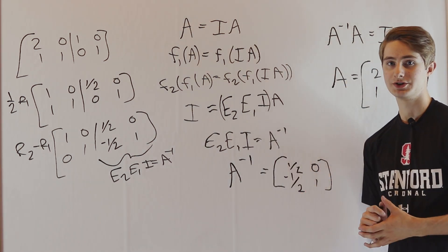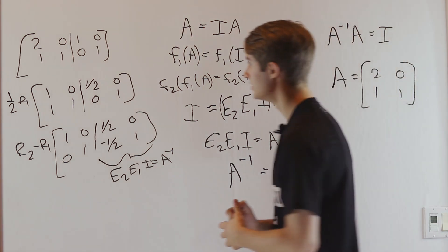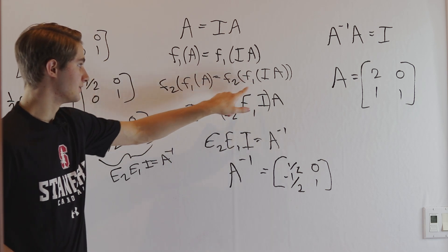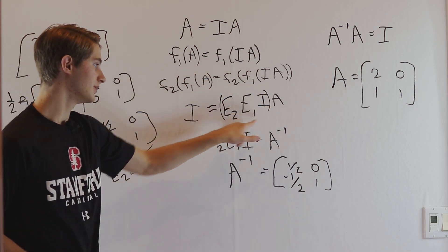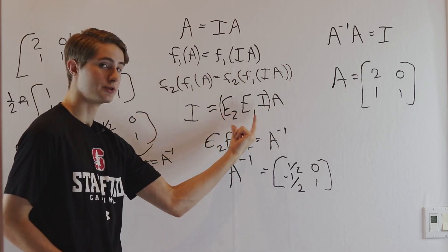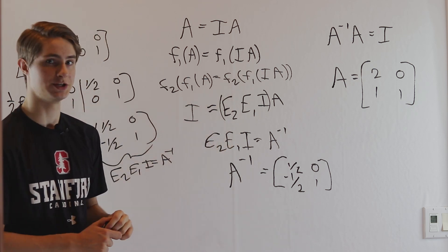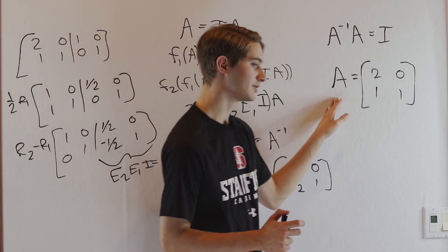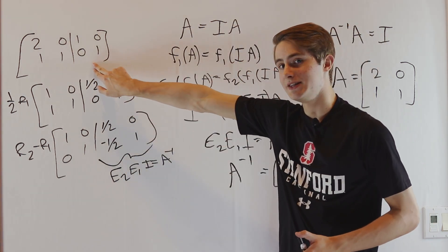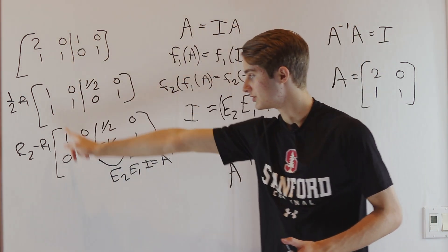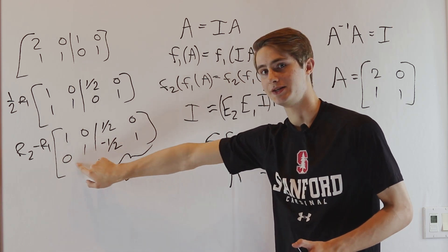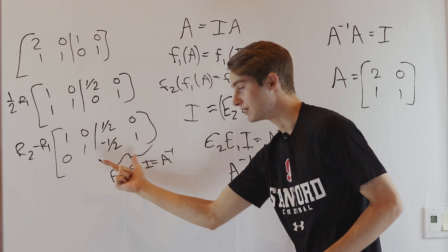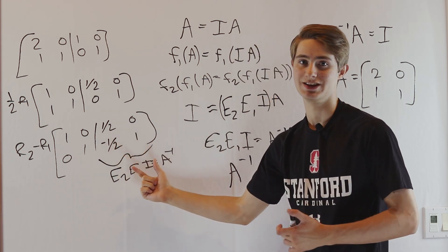Elementary matrices are important in this process because they let us write this set of row operations on the identity as a product of elementary matrices. Therefore, this product equals the inverse matrix. Anytime you want to find the inverse of a matrix, augment it by the identity, then row reduce the left side down to the identity matrix. Keep track of those operations on the right side, and whatever you get is your inverse.